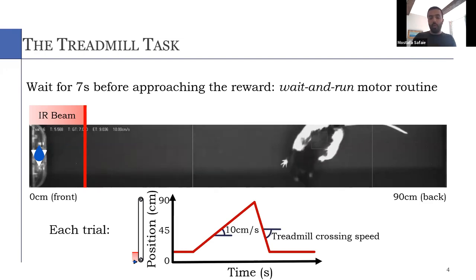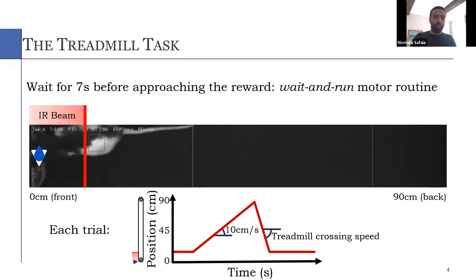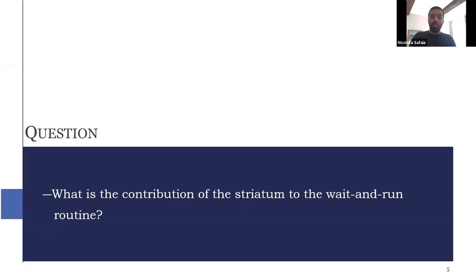So this is like the typical trajectory that we see in each trial. Starting from the front, waiting while the treadmill carries them, and then running forward and outrunning the treadmill. So now the question is what is the contribution of the striatum to this particular routine, what we call the wait-and-run routine.